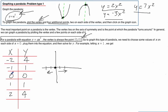So the steps are to find the vertex, pick points, equal number of points, equal distance on either side of that vertex, and then plug them in to calculate your y, and then graph them.